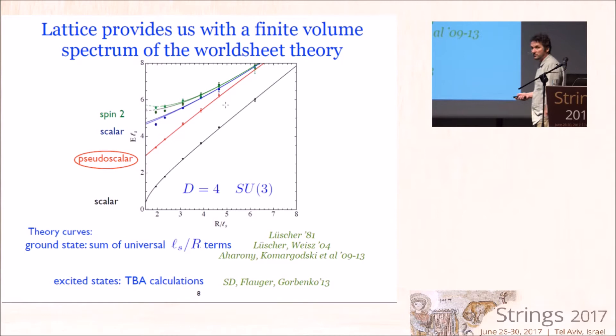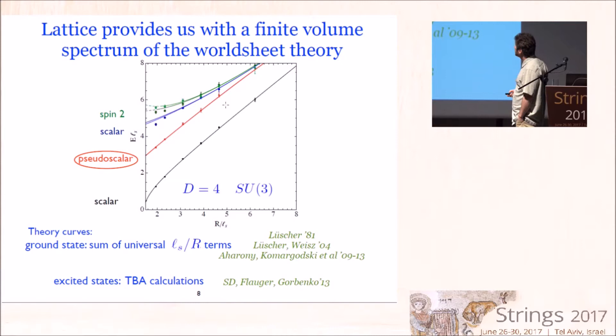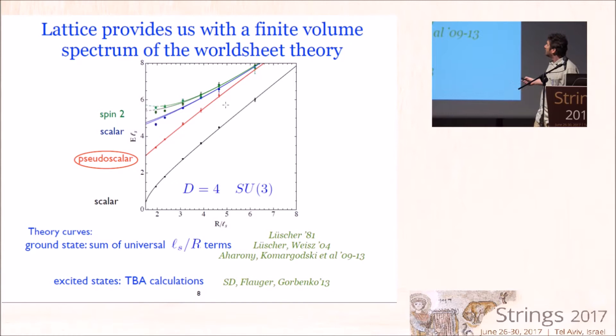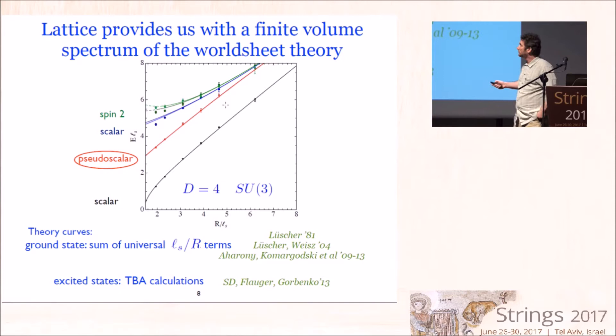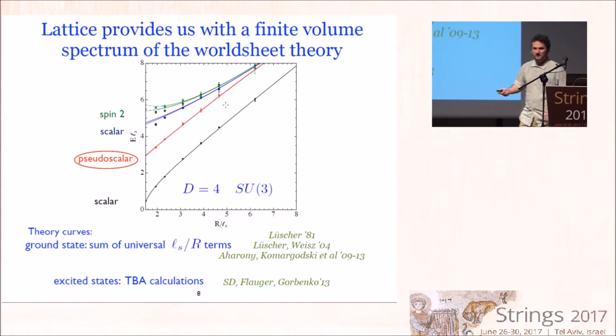The most natural observable lattice provides is the finite volume spectrum, measured via two-point functions of Polyakov loops — strings which wrap around a compact dimension. This is the typical picture from lattice simulation: the horizontal axis is string length and the vertical axis shows energies of different excited states. You can see you're really dealing with a string — all energies are linear when length becomes large. There is also an interesting pseudoscalar excitation that goes almost parallel to the ground state, as if a massive excitation was added on the worldsheet.